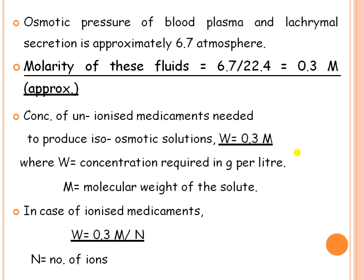The concentration of un-ionized medicament needed to produce an iso-osmotic solution is 0.3 moles: W = 0.3 × M, where W is the concentration required in grams per liter and M is the molecular weight of the solute. For ionizable substances, the formula is modified to W = (0.3 × M) / n, where n is the number of ions formed after ionization of the drug. By calculating W, you can determine how many grams of substance per liter of solution are required to make it isotonic.